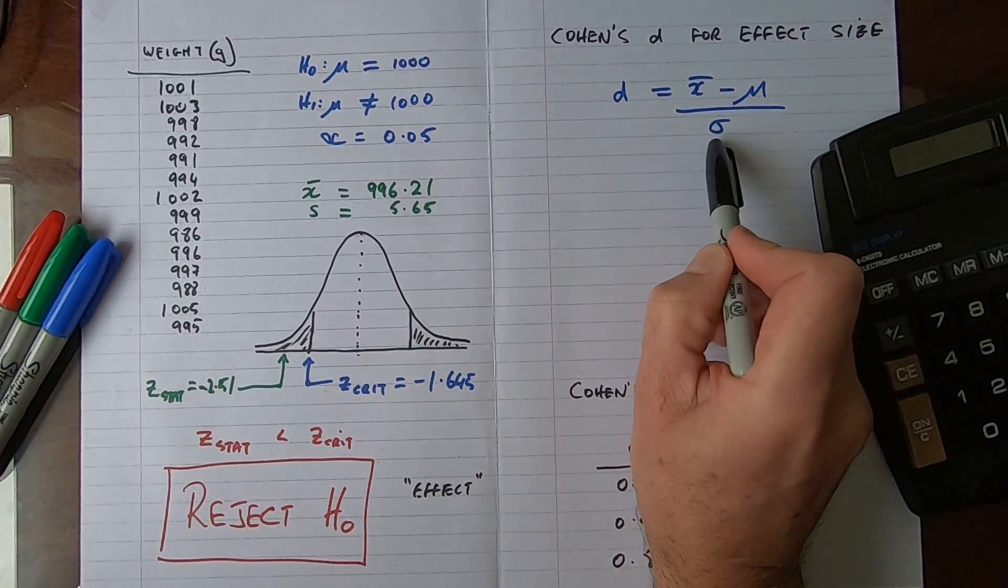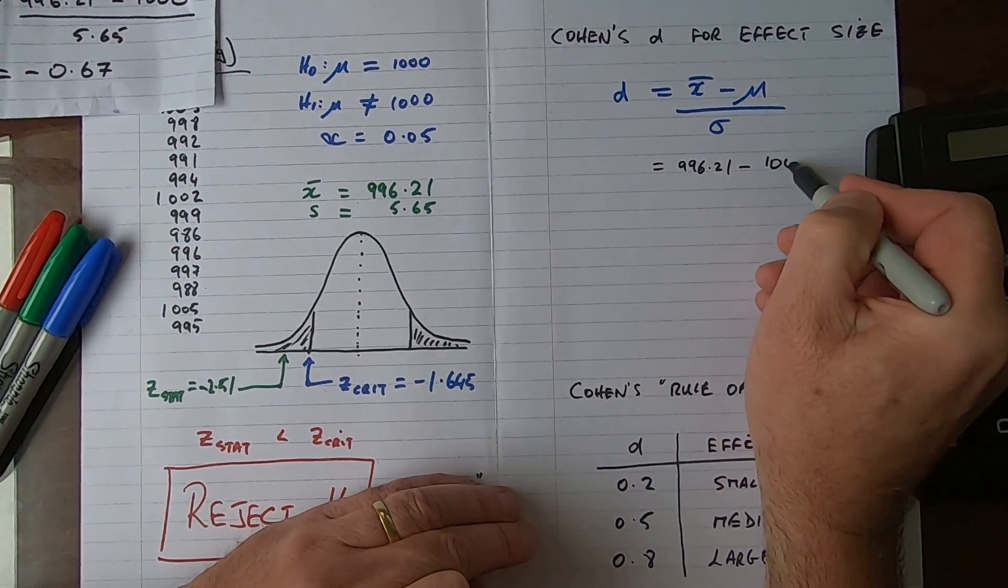So let's go ahead and do that. That's equal to 996.21 minus 1000 and that's divided by 5.65. So let's work that out. So 996.21 minus 1000, that's equal to minus 3.79, and then that's divided by 5.65 and that gives us a value here of minus 0.67. We just take two decimal places there. Now what does this value mean?